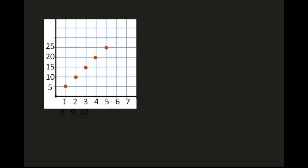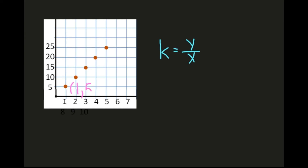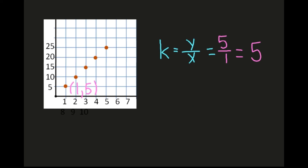You can also calculate the constant of proportionality from data given in a graph. The formula remains k equals y over x. In our graph, we choose a point to plug into the equation. Using the point where x equals one gives the easiest calculation. Using the point (1, 5): y equals 5 and x equals one, so k equals 5 over 1, which is 5. Our constant of proportionality is 5. You can use any point on the graph, but x equals one makes the calculation much easier.